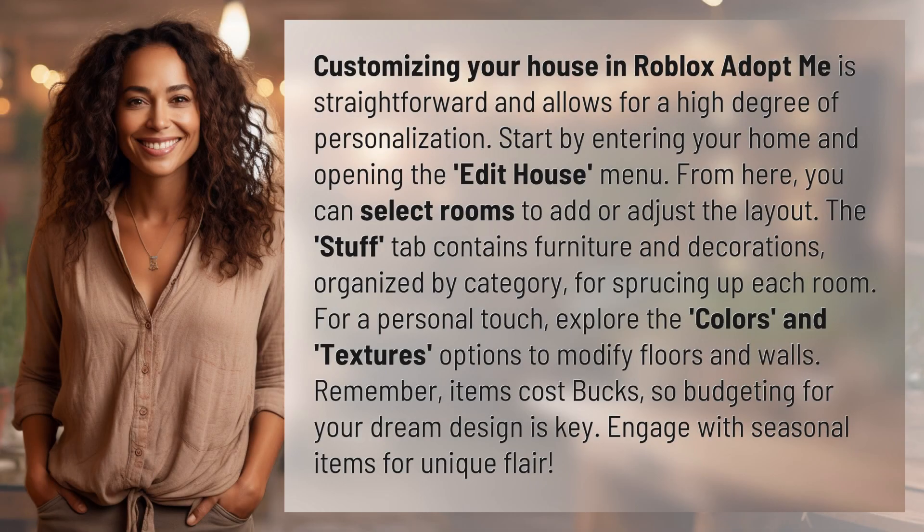Customizing your house in Roblox Adopt Me is straightforward and allows for a high degree of personalization. Start by entering your home and opening the Edit House menu. From here, you can select rooms to add or adjust the layout. The Stuff tab contains furniture and decorations organized by category for sprucing up each room.